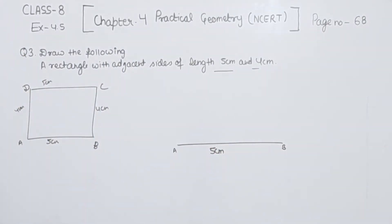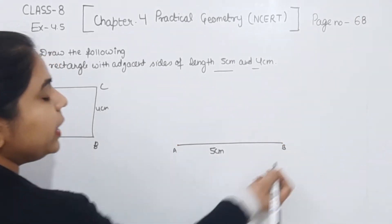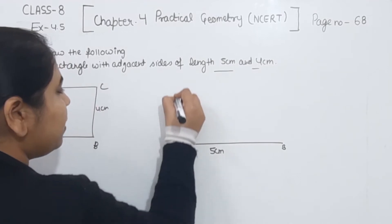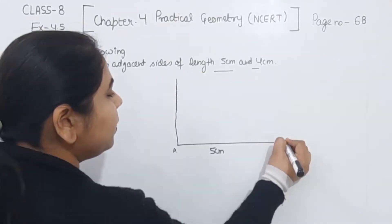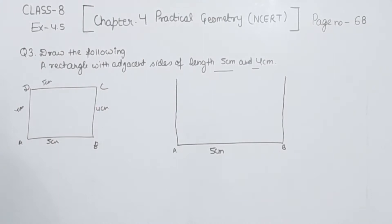Now we know that all the angles of a rectangle are equal to 90 degrees. So we are going to draw an angle of 90 degrees at both point A and point B. We can draw this with the help of a compass. I will teach you how to draw an angle of 90 degrees with the help of a compass.